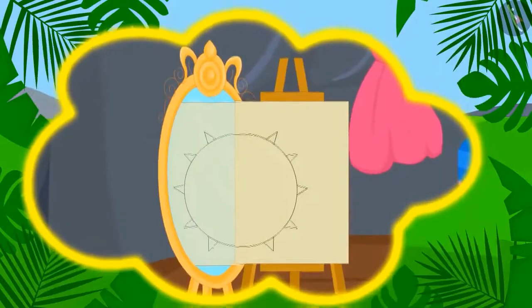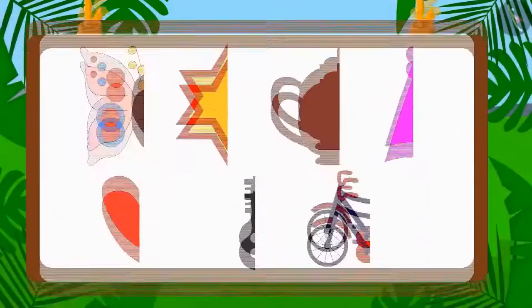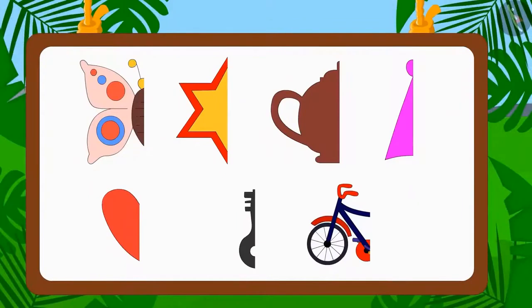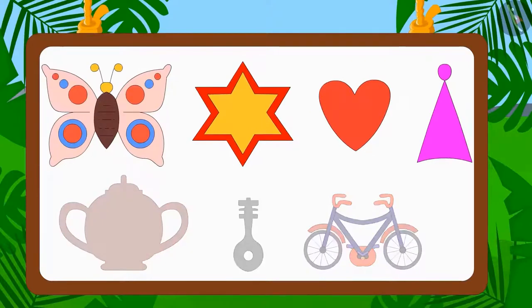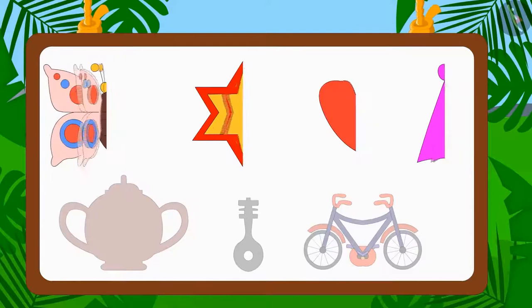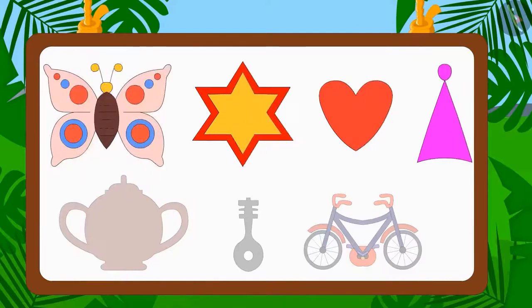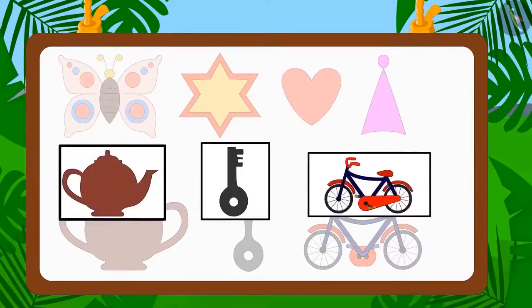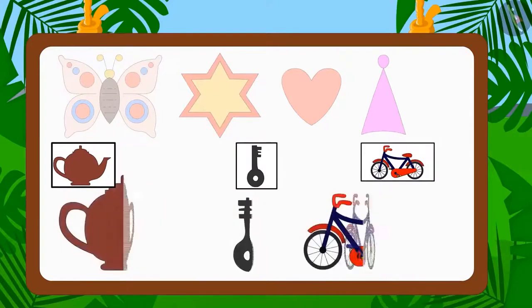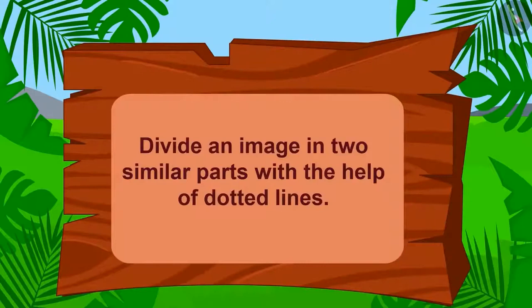In the previous video we learnt what is symmetry. Do you remember Shere Khan's magical mirror? Can you identify which of these incomplete images will become a complete image in the mirror? These are the images that will be complete in the mirror because they are made of two similar parts. These images will not be complete in the mirror because they are not made of two similar parts.